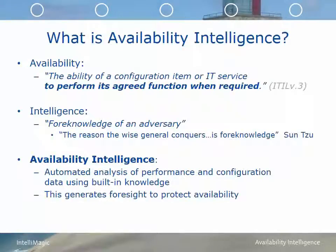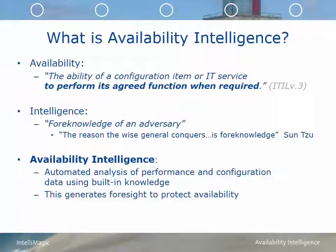What is availability intelligence? Availability is defined by ITIL as the ability of a configuration item or IT service to perform its agreed function when required. Intelligence, as defined by Sun Tzu, is foreknowledge of an adversary. What makes this powerful is when you combine the two — availability intelligence — which is the automated analysis of performance and configuration data using built-in knowledge about the hardware. This generates foresight, which allows you to protect availability.